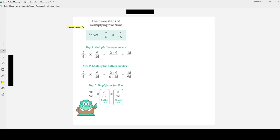Let's look at an example: 2 over 6 times 9 over 16. Step 1, multiply the top numbers which is numerators. Write 2 times 9 on top, 2 nines are 18. Step 2, multiply the bottom numbers. Bottom numbers are also called denominators. Multiply the denominators, 6 times 16 is 96.